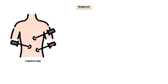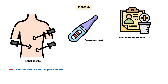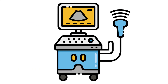Laparoscopy is the criterion standard for the diagnosis of pelvic inflammatory disease. A pregnancy test should be performed to exclude ectopic pregnancy, and urinalysis should be done to exclude urinary tract infections. Vaginal and cervical swabs should be taken for bacterial culture. Other specific tests should be performed to exclude syphilis, hepatitis, and HIV infections. In addition, ultrasound scan is also very useful in excluding other pathologies involving the genital tract.